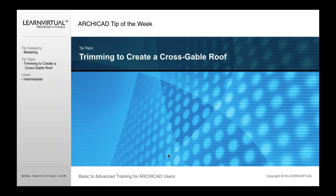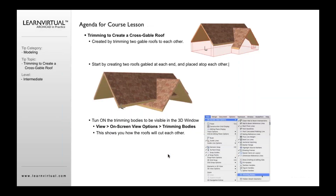This is going to be our ARCHICAD tip of the week: trimming to create a cross gable roof. If you've not done this before, what you do is you create two roofs — two gable roofs — and then intersect them with each other.